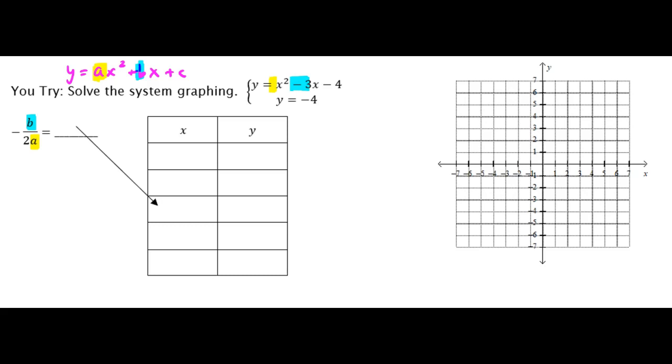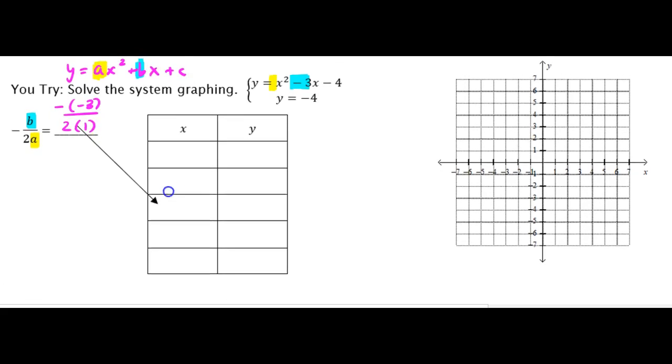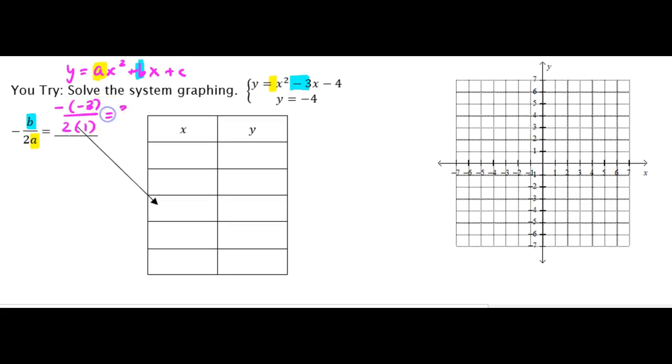So I'm going to take these numbers and plug them in. We're going to have negative b, which is negative 3, over 2 times a, which is 1. Negative negative 3 is positive 3, and then 2 times 1 is 2. I could make that into a decimal and make it 1.5. Makes it a little bit easier to graph.